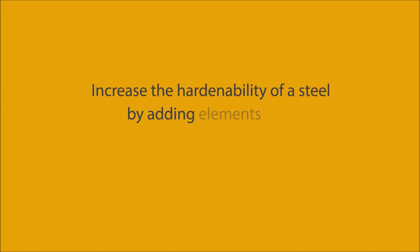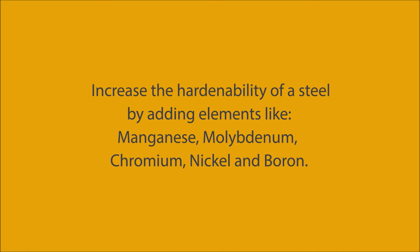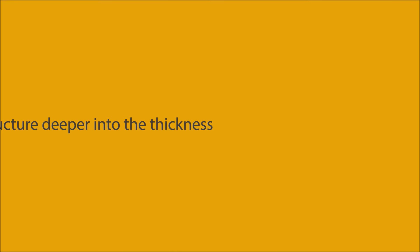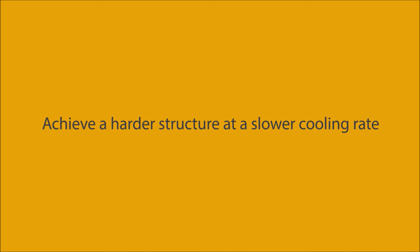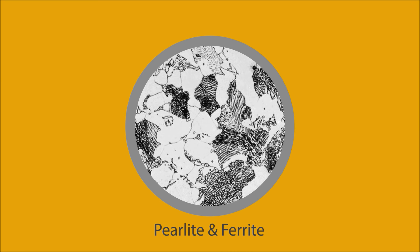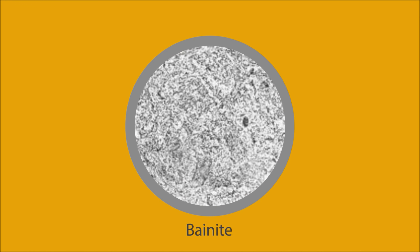We can increase the hardenability of a steel by adding elements like manganese, molybdenum, chromium, nickel, and boron. Adding these elements increases hardenability, enabling us to achieve a harder structure deeper into the thickness. This is because it becomes easier to achieve a harder structure at a slower cooling rate. The structure of a steel can be: pearlite with ferrite or cementite, which is the softer structure; martensite, which is the harder structure; and bainite, which is in between.